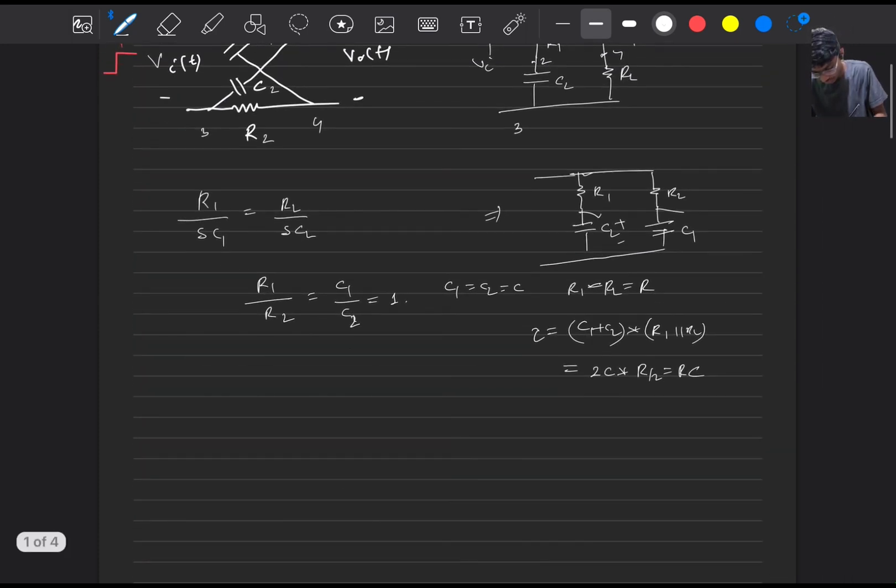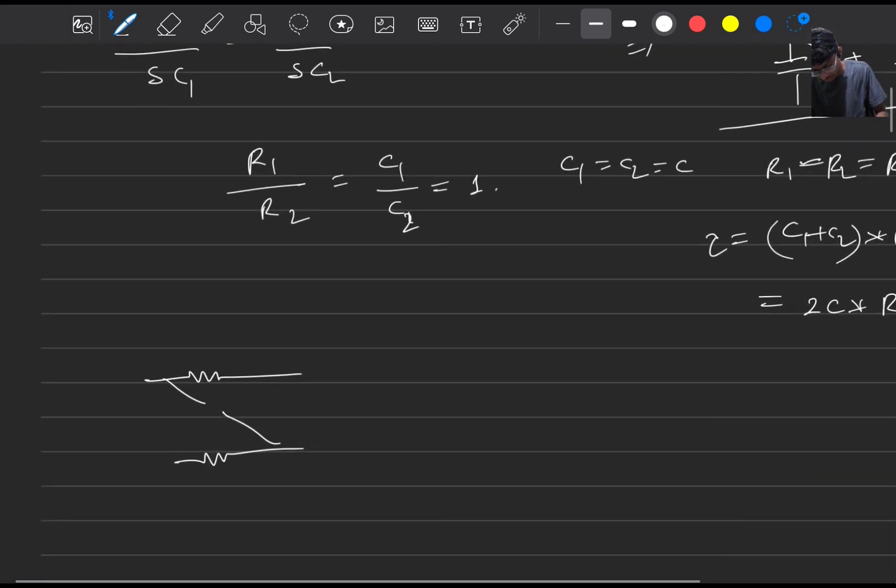So initially as there are no charges present, the circuit will look like something like this. This is R and C, this is R and C, this becomes source of it. And here we are applying plus Vp and here we are measuring the output at t equals zero plus.